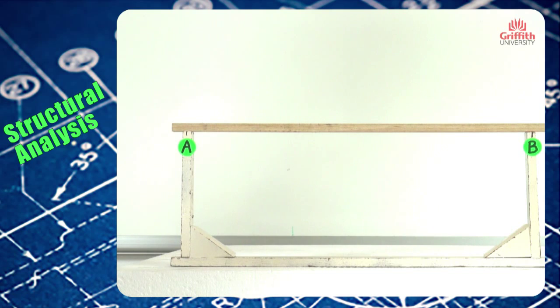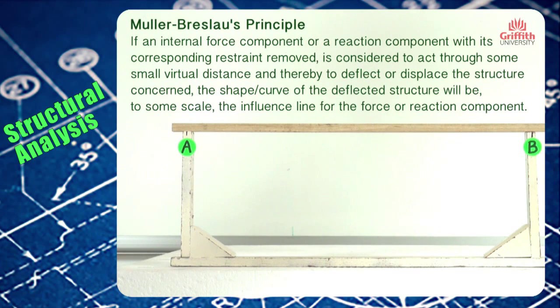Mueller-Breslau's principle states that if an internal force component or a reaction component with its corresponding restraint removed is considered to act through some small virtual distance and thereby to deflect or displace the structure concerned, the shape of the deflected or displaced structure will be, to some scale, the influence line for the force or reaction component.